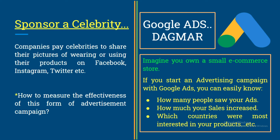You must have observed that Byju's, White Hat Junior, Q Math, and many more are using celebrities to establish themselves. Now let's talk about Google Ads — the epitome of the DAGMAR model. Imagine you own a small e-commerce business. With Google Ads, you can easily know how many people saw your ad, how much your sales increased, how many people clicked on each ad, which countries were most interested in your products, and most importantly, your return on investment.